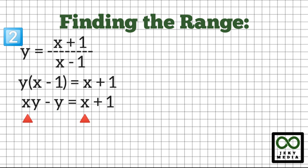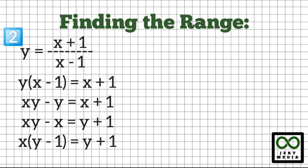Next, let's combine all terms with x variables on the left. This becomes xy minus x. Transpose negative y to the other side — this will become y plus 1. Extract x on the left side: x times (y minus 1) equals y plus 1.